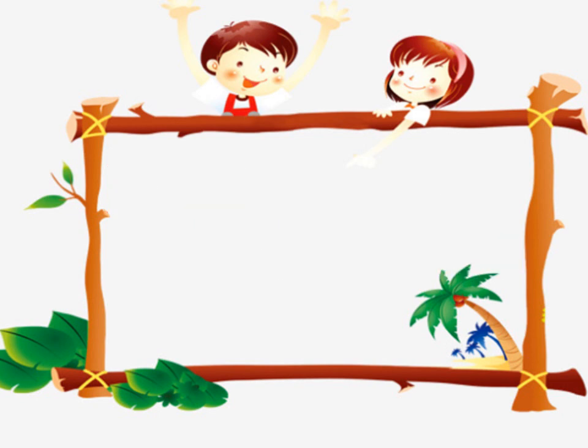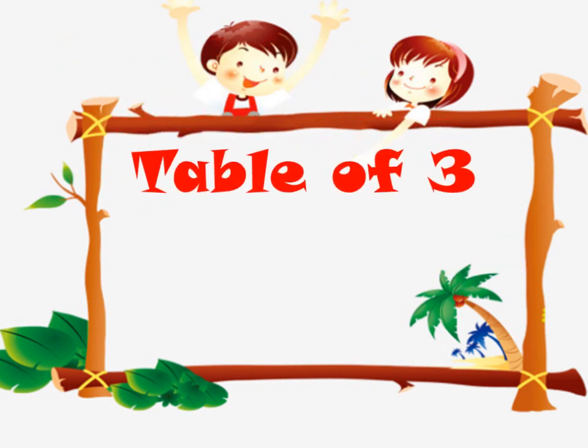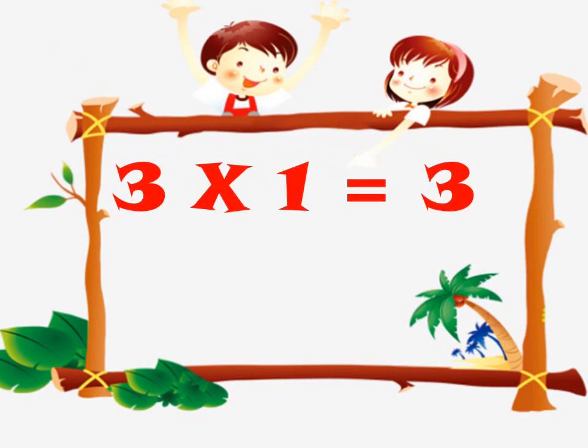Let's start with the table of 3. 3-1 is a 3. 3-1 is a 3. Recite after me, kids.